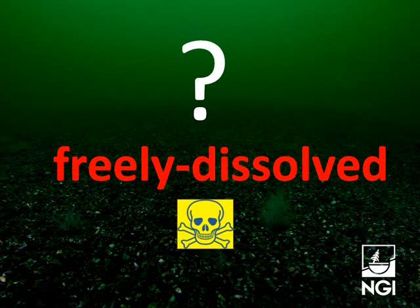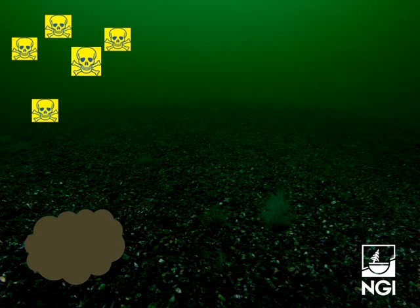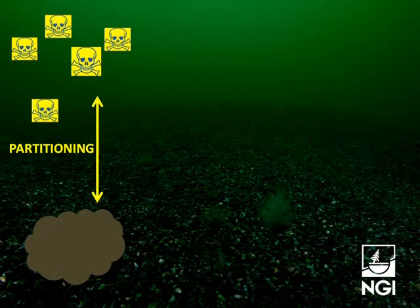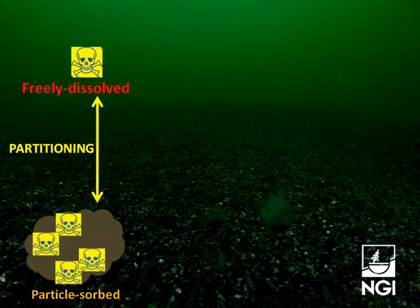Now, what do I mean by freely dissolved? Let's take a look at how contaminants spread in water. Imagine you're below the surface of the water and there's been a contamination spill. What are all those contaminant molecules doing? We have to consider the other things down there. There are a lot of particles or sediments — these can be floating in the water column, but mostly they're lying on the seabed. The contaminants undergo a process called partitioning or sorption. Some contaminants will stick or sorb to the sediments; the rest will remain freely dissolved in the water. We refer to these as freely dissolved, and the contaminants stuck to the sediments as particle-sorbed.